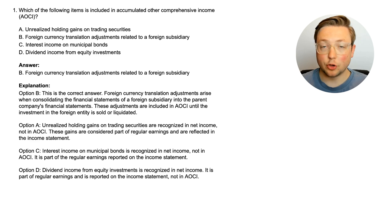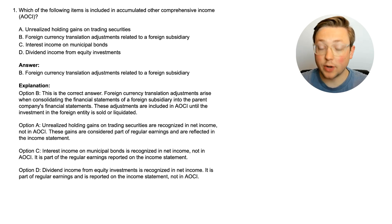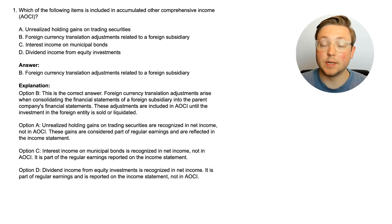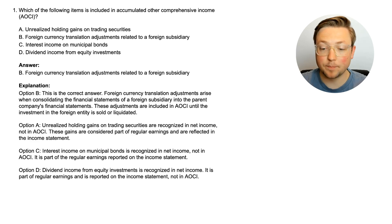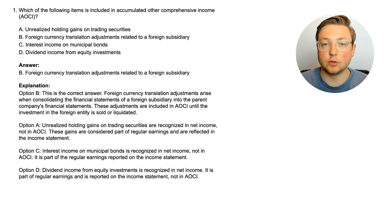AOCI — accumulated other comprehensive income — is basically the accumulation of other comprehensive income over time. Other comprehensive income is the current year amount. The reason option A is wrong: unrealized holding gains on trading securities are recognized in net income, not OCI. Interest income on municipal bonds is also recognized in net income. And dividend income is included in net income. So the only thing here that is part of OCI is the foreign currency translation adjustment related to a foreign subsidiary.